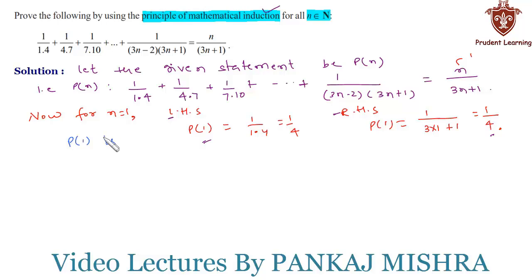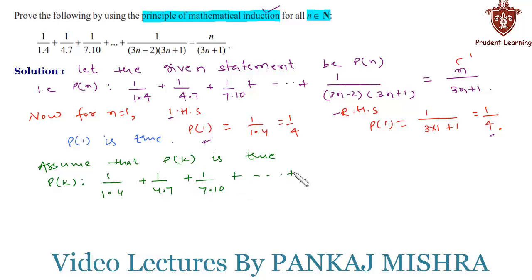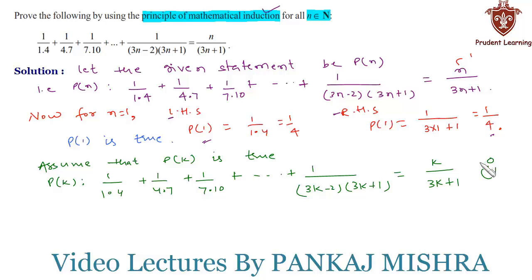In our second step, we assume that P(k) is true for some positive integer k. That is, we assume P(k): 1/(1×4) + 1/(4×7) + 1/(7×10) + ... + 1/((3k−2)(3k+1)) = k/(3k+1). Let us call this equation 1.